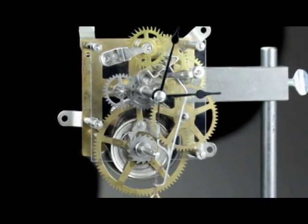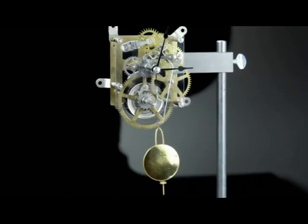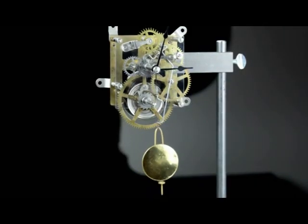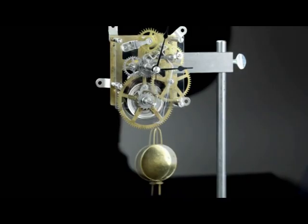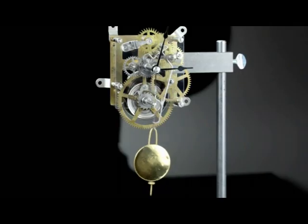In order to display both hours and minutes, the motion works divides the hourly rotation of the minute hand by twelve to move the hour hand once around the dial for every twelve rotations of the minute hand. And that's it! Now, I know that's a lot of information, so let's break it down.